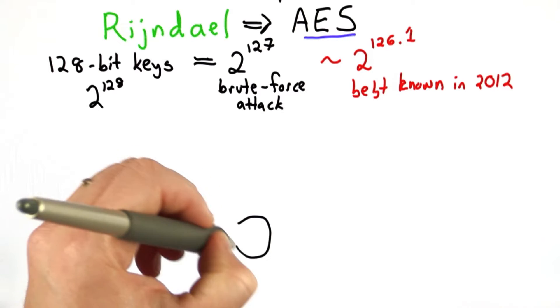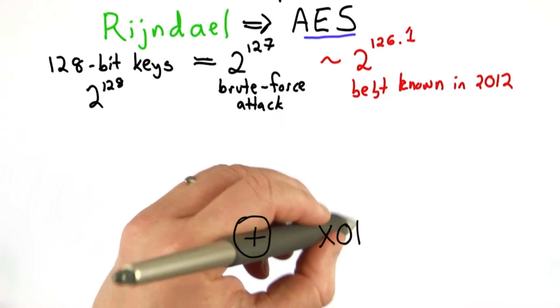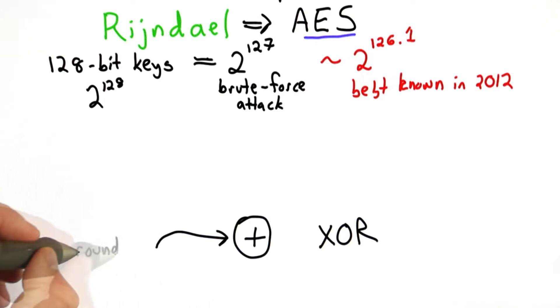They all involve XORs, so we saw that in the one-time pad, and they're XORing some round key, which is generated by a key schedule, some process of generating new keys for each round.